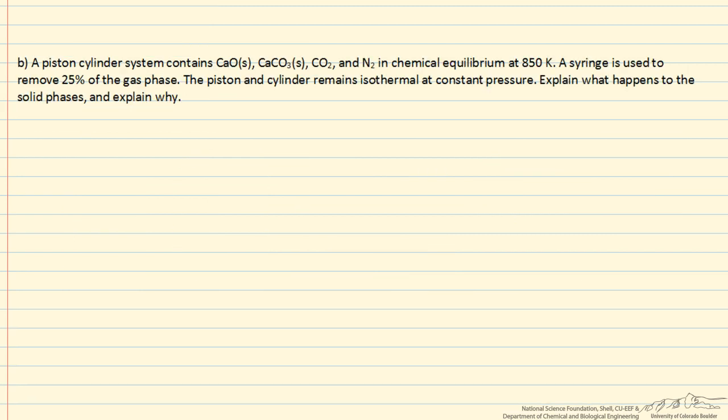This is the example on chemical equilibrium where we have a container, piston and cylinder arrangement, constant pressure where we have some solid calcium oxide in one phase, calcium carbonate in the second phase, and then CO2 and nitrogen in the gas phase, and we're at equilibrium.